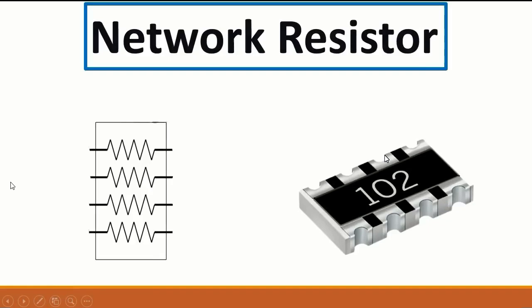Next we have the network resistor. It works on the same principle as a normal resistor, but it combines many resistors inside one package. For example, this one combines three resistors, and the schematic shows a network resistor with four resistors inside it. We use this component to save space on the motherboard, rather than placing four separate resistors.